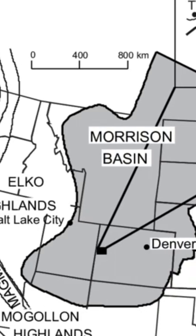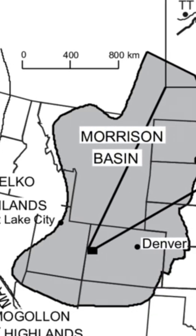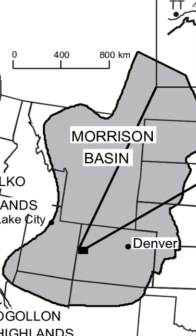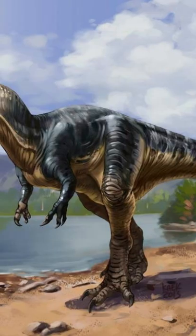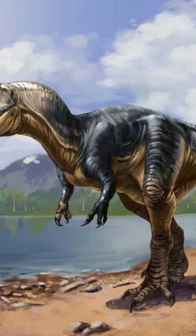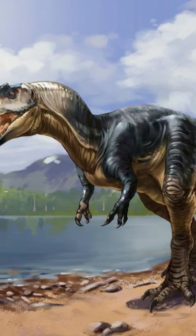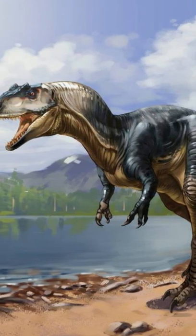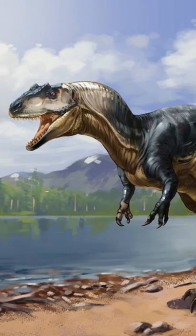Allosaurus fossils are commonly found in the Morrison Formation in western United States. They likely would have inhabited semi-arid floodplains, conifer forests, and savannas with wet and dry seasons.